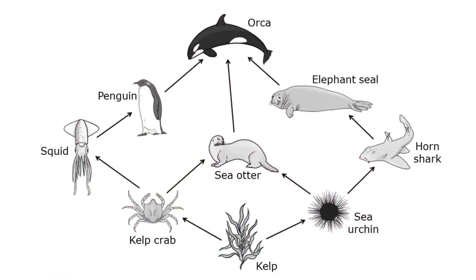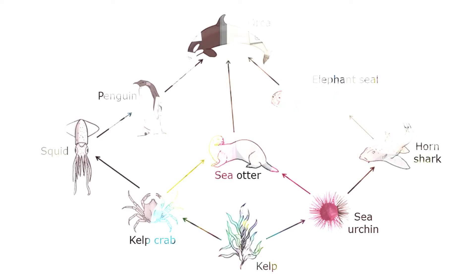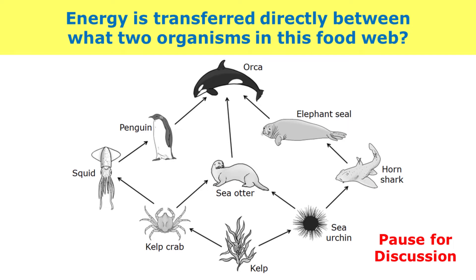Food webs show how food energy is transferred through an ecosystem. Here I have a sample food web from a marine ecosystem. So here's your question: in this food web, energy is transferred directly between which two organisms? Take a minute and discuss that with your classmates, then I'll be back to talk about the answer.